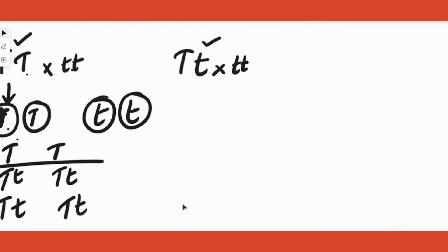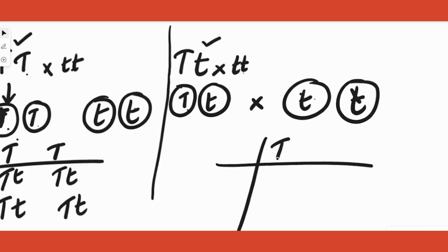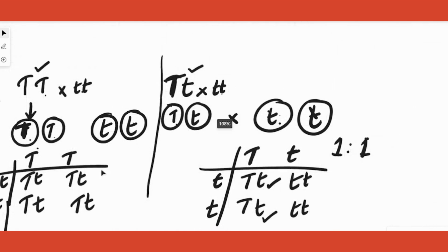On the other hand, if the plant is heterozygous (Tt), you will not get all tall pea plants in the next generation. Writing out the Punnett square with T and t from the Tt parent and t from the recessive parent, you find that half the plants are tall (Tt) and half are dwarf (tt) — a 1:1 ratio. This 1:1 ratio of tall to dwarf indicates that the parent pea plant was heterozygous dominant.